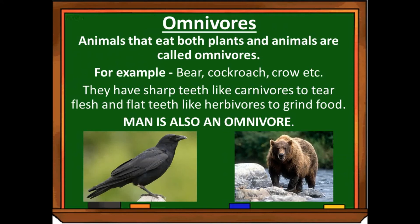Next is omnivores. Omnivores are those animals that eat both plants and animals. For example, bear, cockroach, crow. They have sharp teeth like carnivores to tear flesh, and flat teeth like herbivores to grind plant food. Their feeding habits include both plants and animal products. Man is also an omnivore — we eat both plant products and animal products.